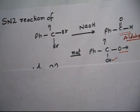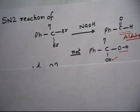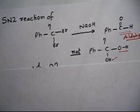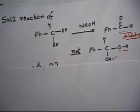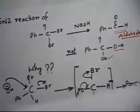If you remember, a carbon containing two OH groups is not stable — the same kind of argument applies here. Think about what happens after the first OH is added and then see what will happen next.